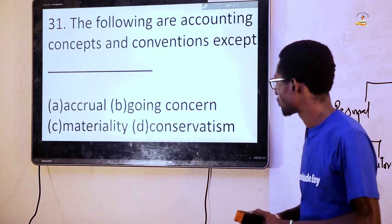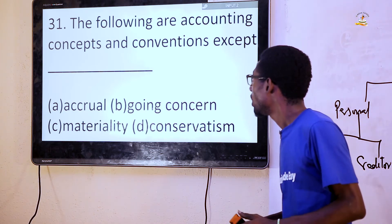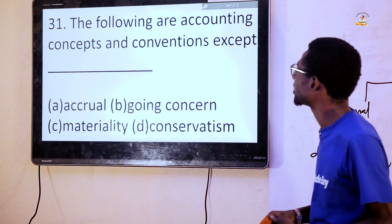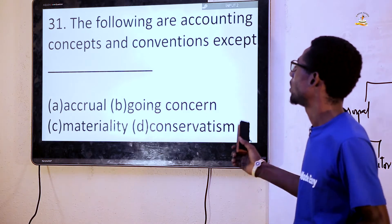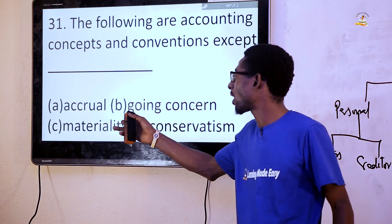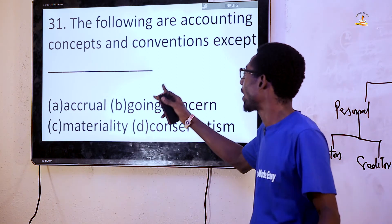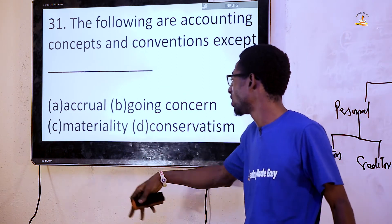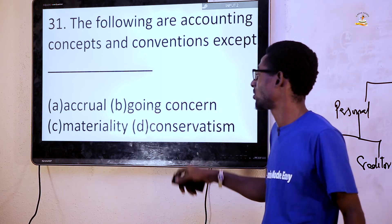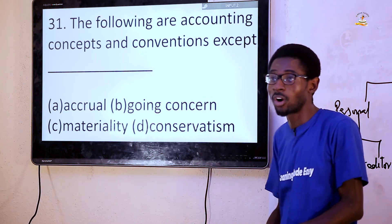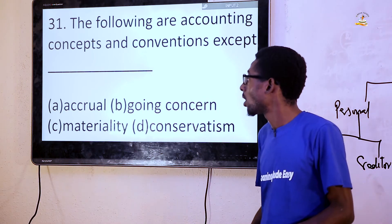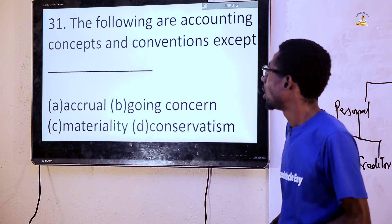Question 31: The following accounting concepts are a convention. We have the accrual concept, the going concern, the materiality, and conservatism. The answer is conservatism, which is a convention. The answer is option D.